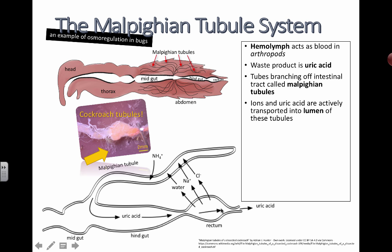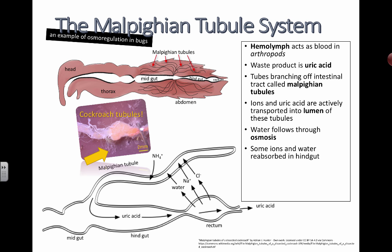Water is going to follow through osmosis — this is part of the osmoregulation. Besides the ammonium ions being pumped in to be converted into uric acid, you also have sodium ions and chloride ions and other ions being actively transported in. Whenever you have ions being pumped to one side, this is going to make the inner lumen more salty, which is going to make water follow by osmosis.